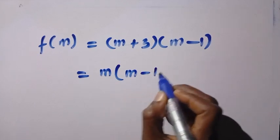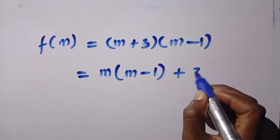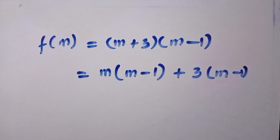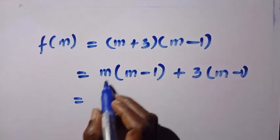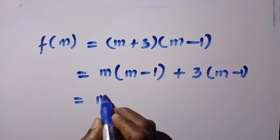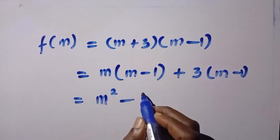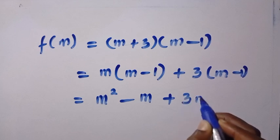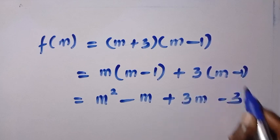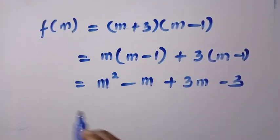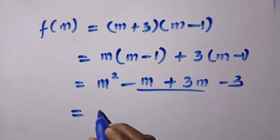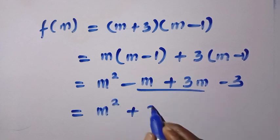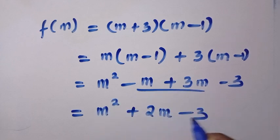So expanding this out, m times m that is m squared minus m times 1, that is minus m, plus 3 times m, we have it as 3m minus 3 times 1, that is minus 3. So here we have the two middle terms. Here is m squared plus 2m minus 3.